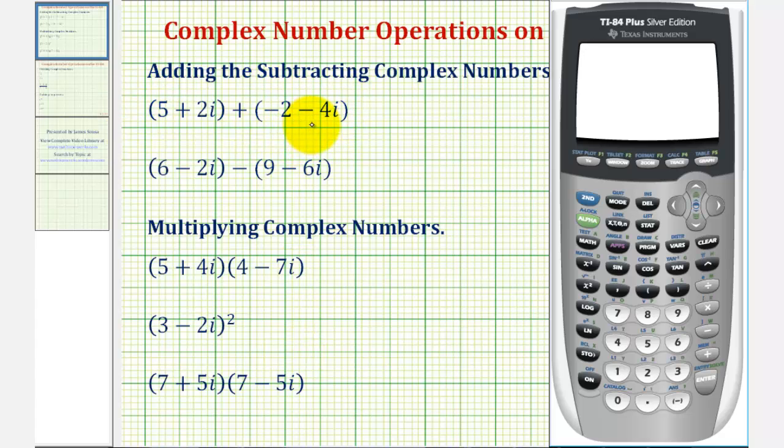So we'll first find the sum of these two complex numbers. We'll have open parenthesis, five plus two i, and the i is second decimal point. So second decimal point brings up i, the imaginary unit, close parenthesis, plus open parenthesis, negative two minus four i. Again, the i is second decimal point, close parenthesis, and enter. So our sum is three minus two i.